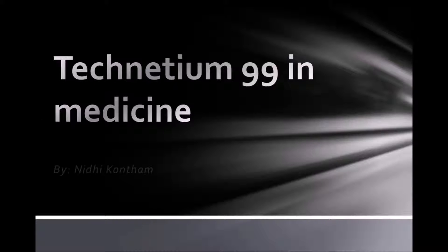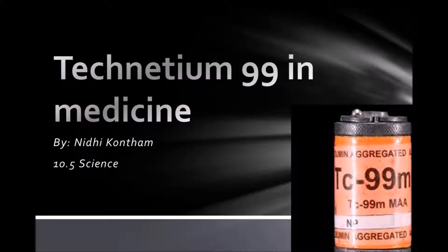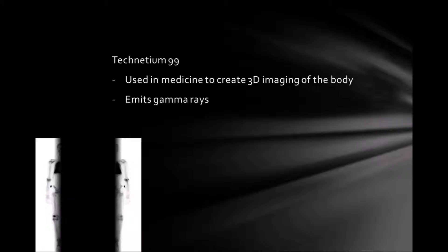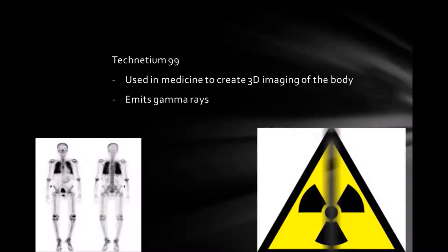The radioisotope Technetium-99 is used in medicine to create 3D imaging of the body. Technetium-99 emits gamma rays, and due to the high energy from the gamma rays, the arrangement of the imaging detectors is precise. This creates almost accurate images.